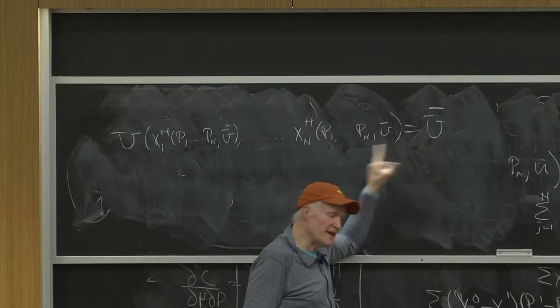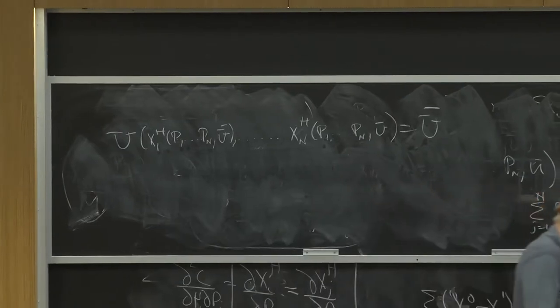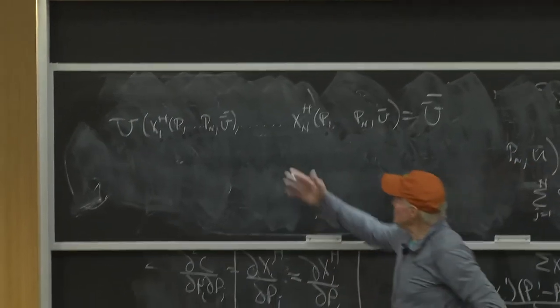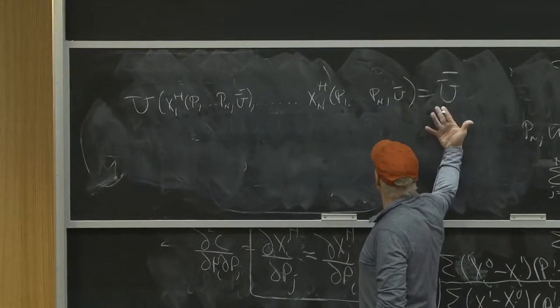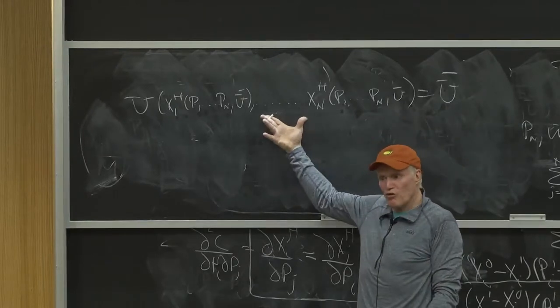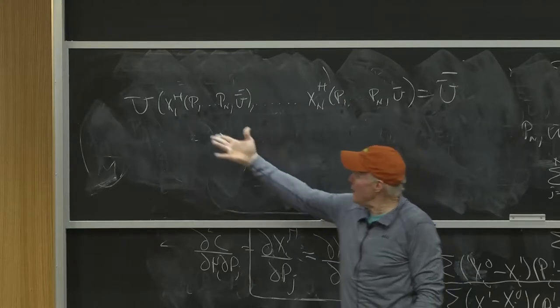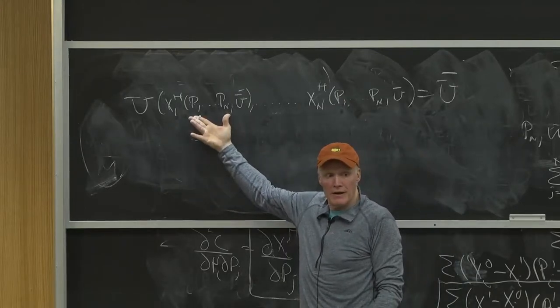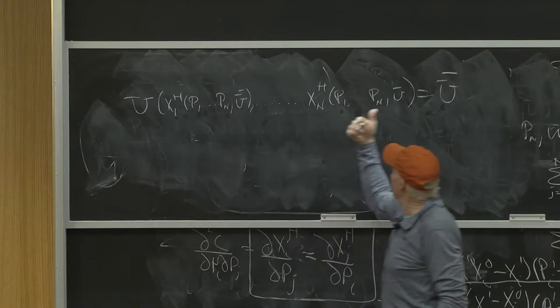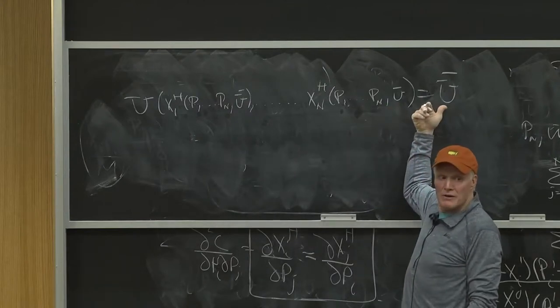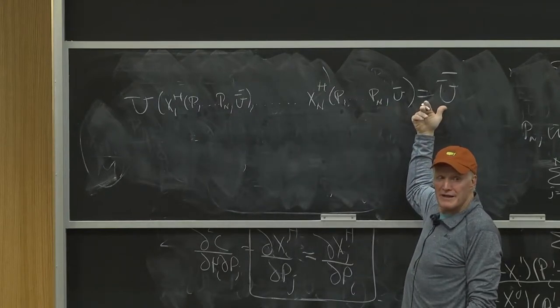And the reason I can differentiate this with respect to p and still assume the derivative of this side is equal to the derivative of that side is because this holds for all p. This just doesn't hold for a particular p. No matter what p I put in here, because I got u bar here, I got to get u bar out. Do people understand that?